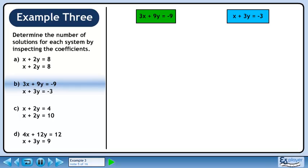In part b, we have 3x plus 9y equals minus 9 and x plus 3y equals minus 3.